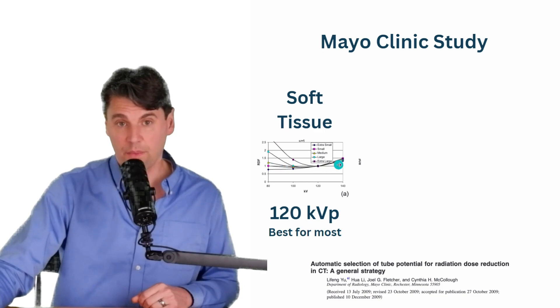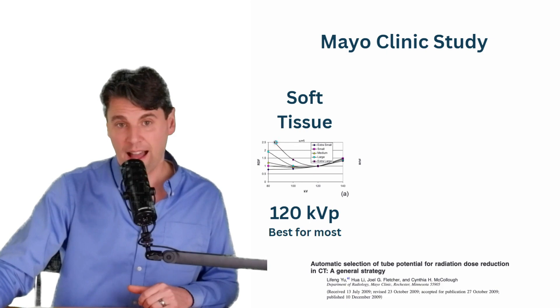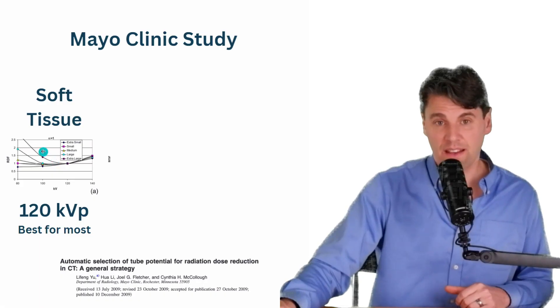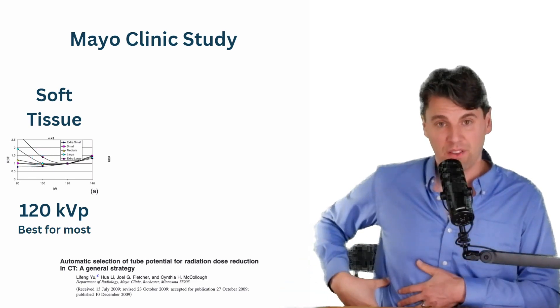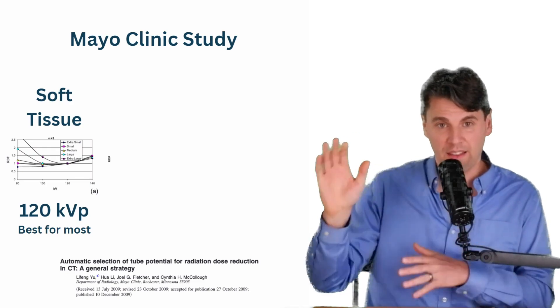For the soft tissue task, you can see the curves are more flat. But for relatively larger patients, it becomes actually disadvantageous to use the lower KVPs, because those lower KVPs are not able to adequately penetrate. You can see there is significant difference here, based on the patient size. That's why we need a method to actually estimate the patient size, and use that in this selection.